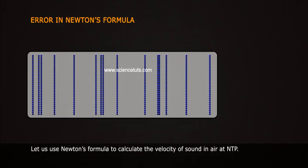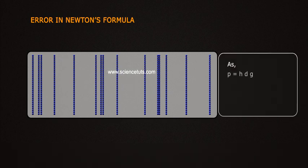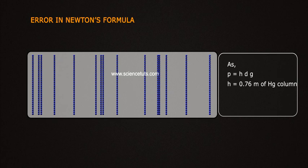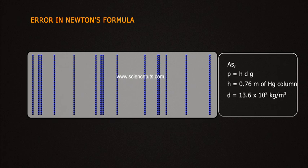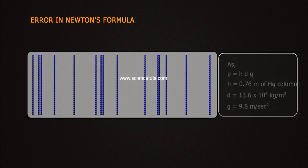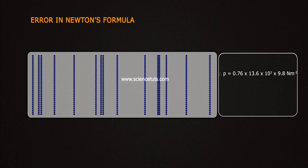Error in Newton's Formula. Let us use Newton's formula to calculate the velocity of sound in air at NTP. Here p equals h·d·g, where h equals 0.76 m of mercury column, d equals 13.6 × 10³ kg per meter cube, and g equals 9.8 m/s². Therefore, p equals 0.76 × 13.6 × 10³ × 9.8 N/m².